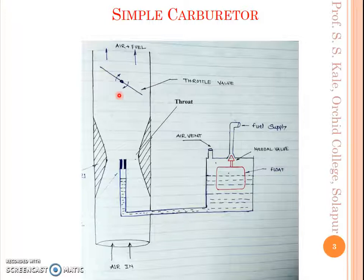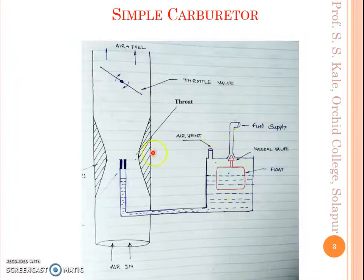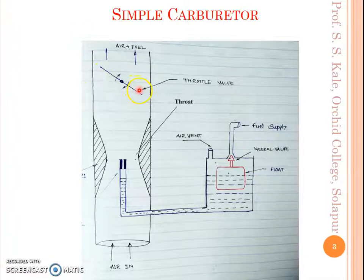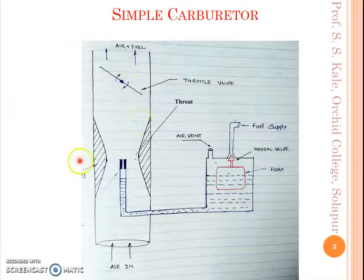So now we understand how this simple carburetor works. We have seen its construction, its working, and what the air-fuel ratio is and its types. Initially, when the throttle valve is closed, a lean mixture is supplied, and as we go on opening the throttle valve the mixture goes on enriching. Thank you.